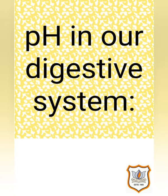pH in our digestive system: our stomach produces hydrochloric acid, which helps in digestion of food without harming the stomach. During indigestion, the stomach produces too much acid and this causes pain and irritation. To get rid of this pain, people use bases known as antacids. These antacids neutralize the excess acid. Magnesium hydroxide, known as milk of magnesia, is a mild base used for this purpose.